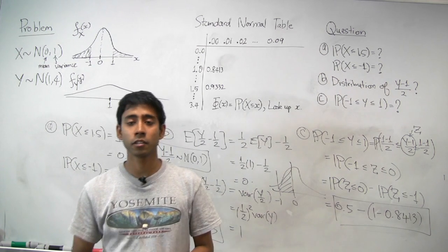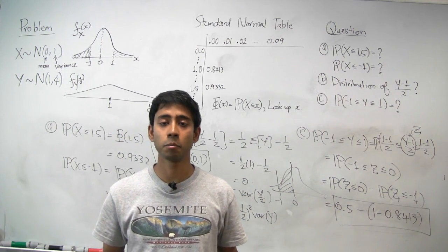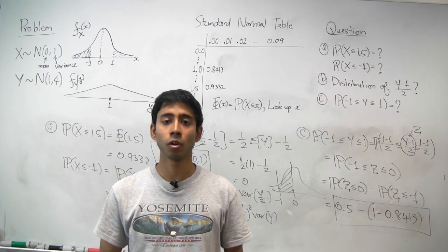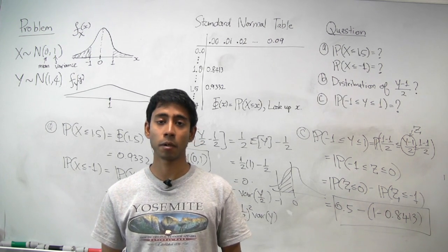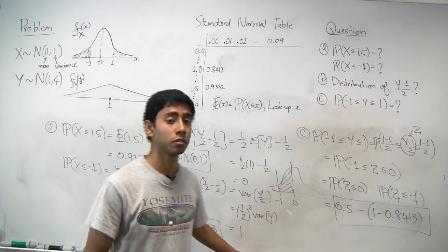So we basically calculated a few standard probabilities for normal distributions. And we did that by looking them up from the standard normal table.